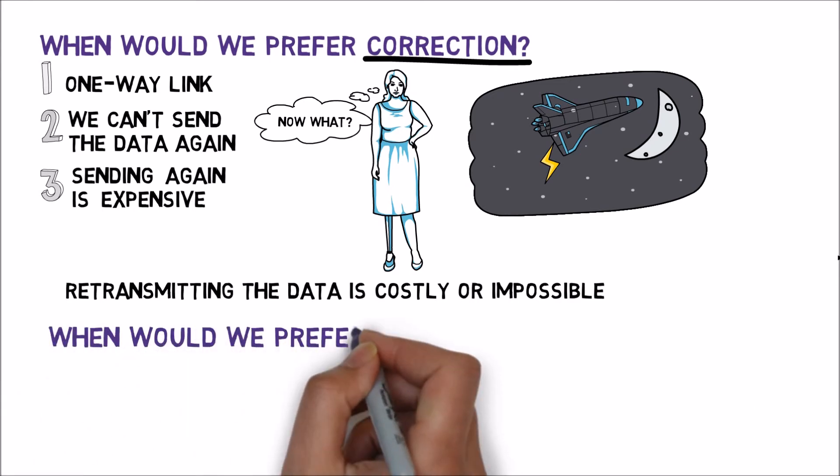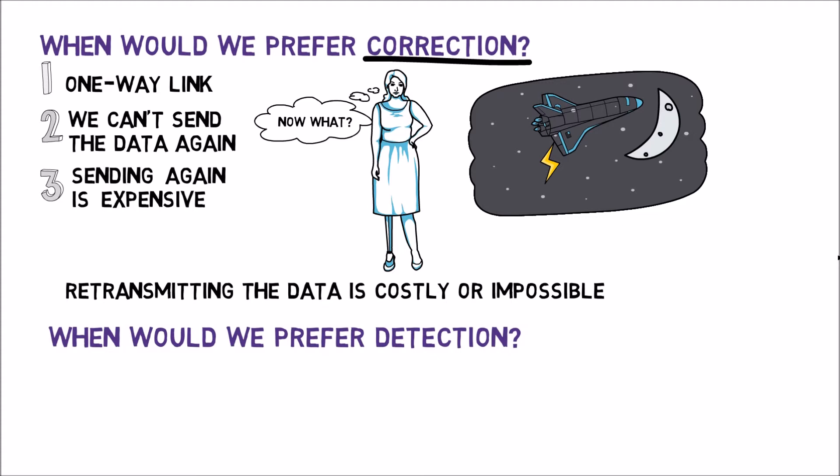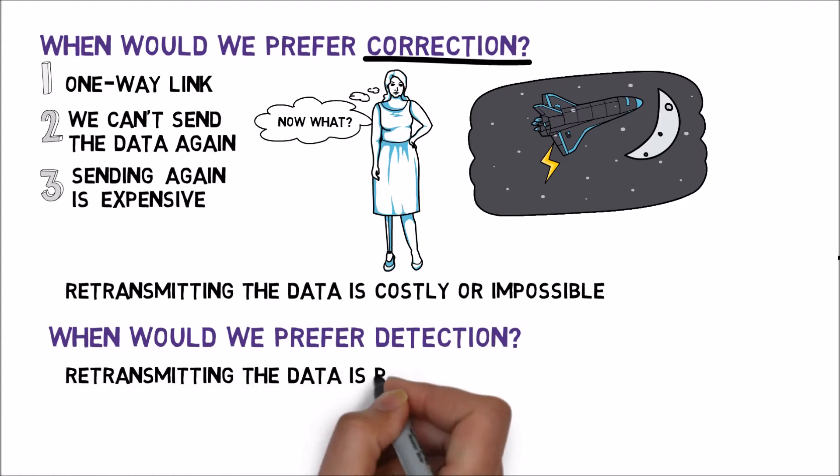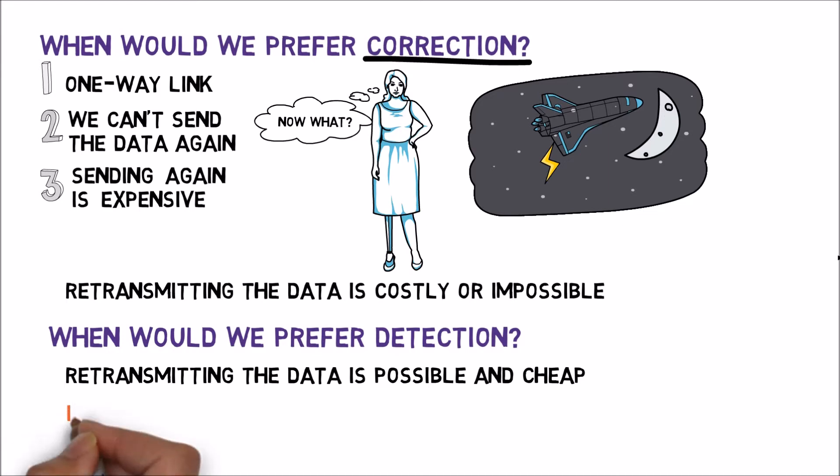When would we prefer error detection? Well, in case we can retransmit the data, we usually prefer error detection since it comes with very little overhead compared to error correction, especially when sending the data is relatively cheap. For example, in the internet, if an error occurs when we send a frame, no problem—we can simply send it again. The protocols that we will meet in this course will thus rely on error detection rather than error correction for handling errors. Note that it doesn't mean that error detection is simply better. It just better fits the internet than error correction. As mentioned before, error correction is preferable in other cases.